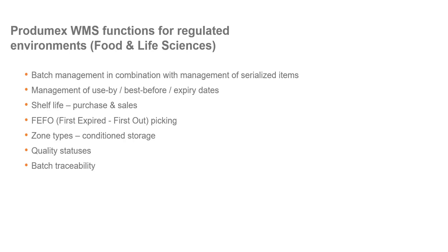During the demo, we will highlight specific WMS functions for regulated industries like food and life sciences. These include batch management combined with serialized item management, management of use-by, best before and expiry dates, shelf life concepts for purchase and sales, first expired first out picking, zone types for conditioned storage, quality statuses, and batch traceability.